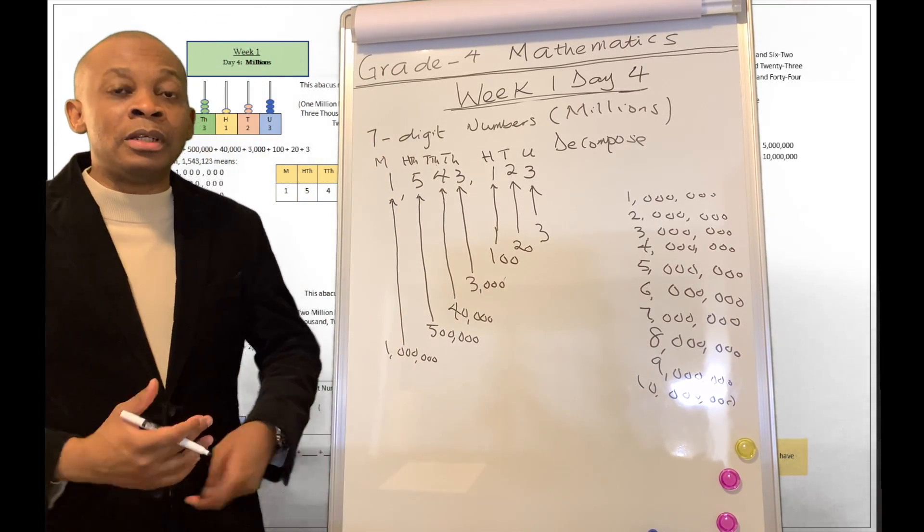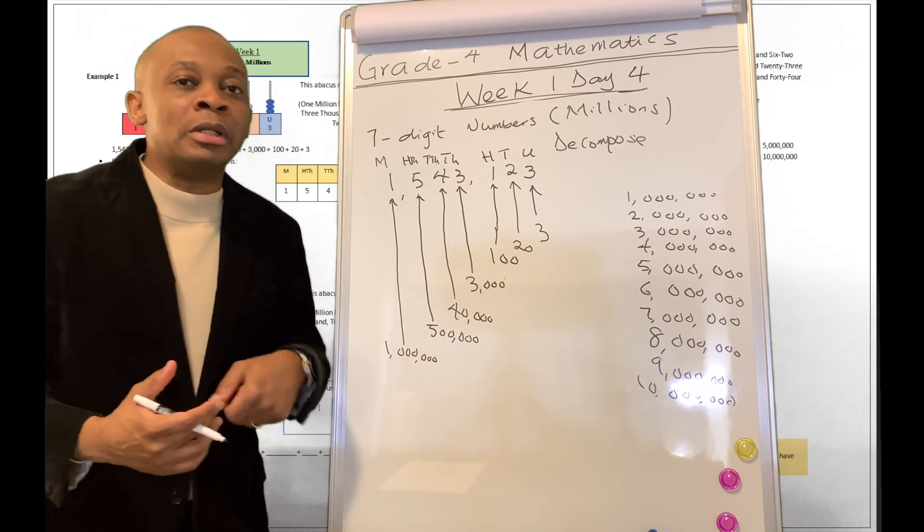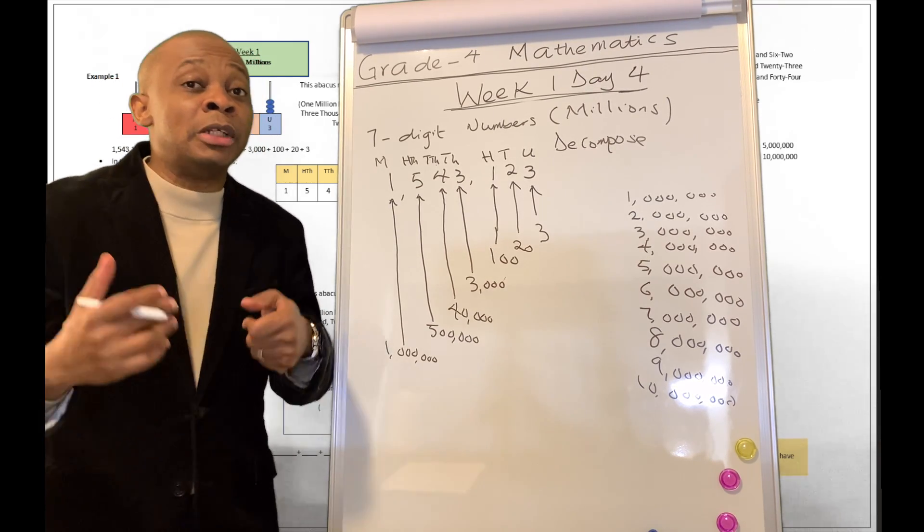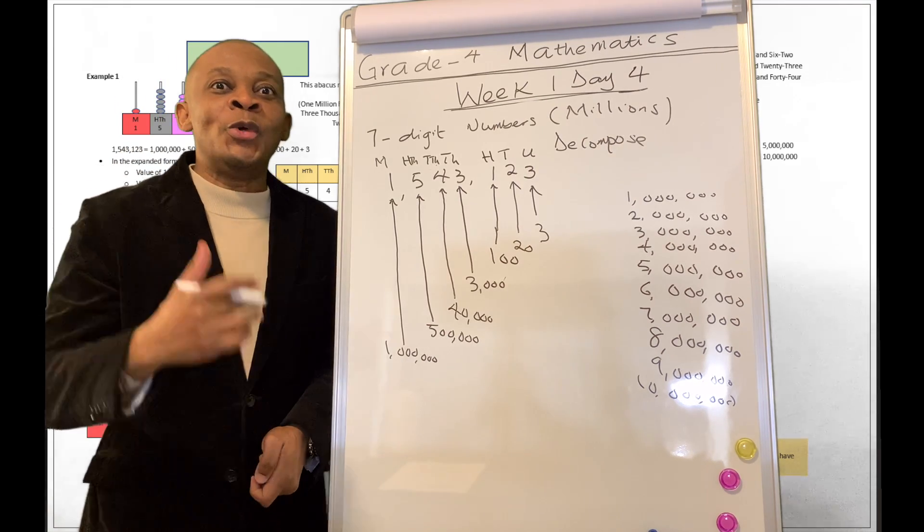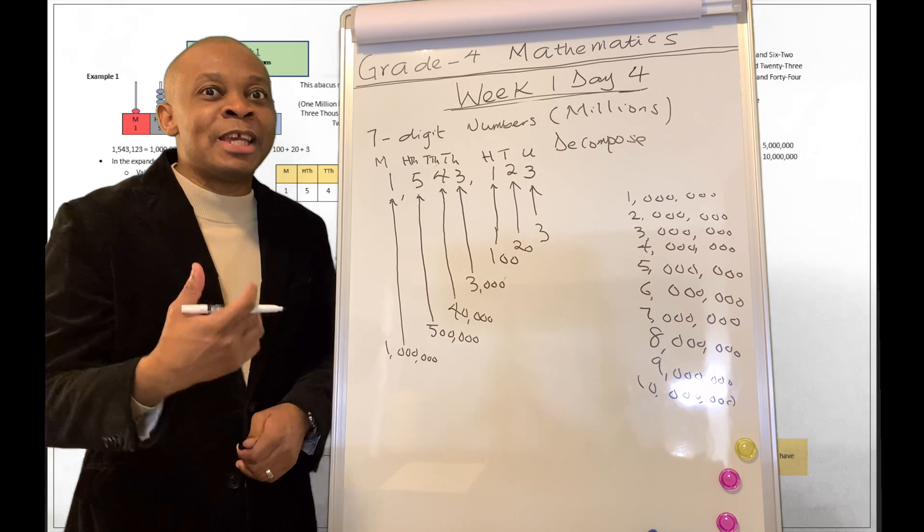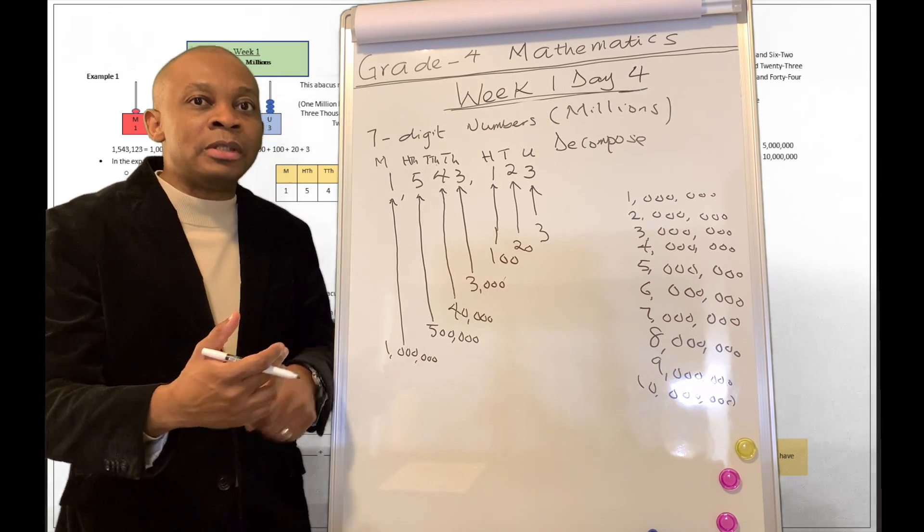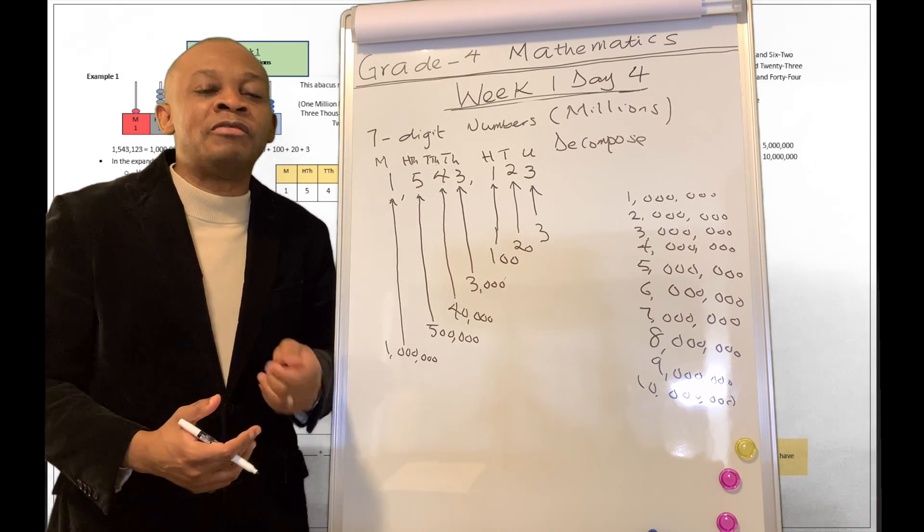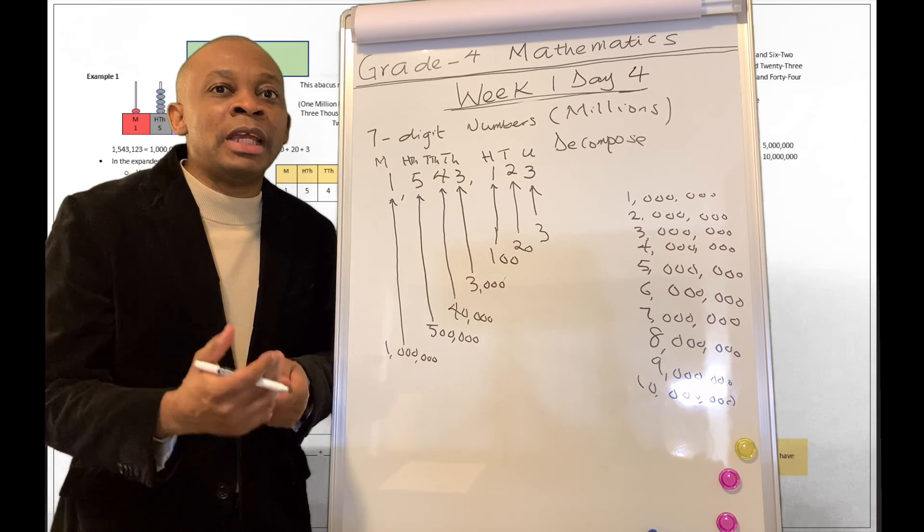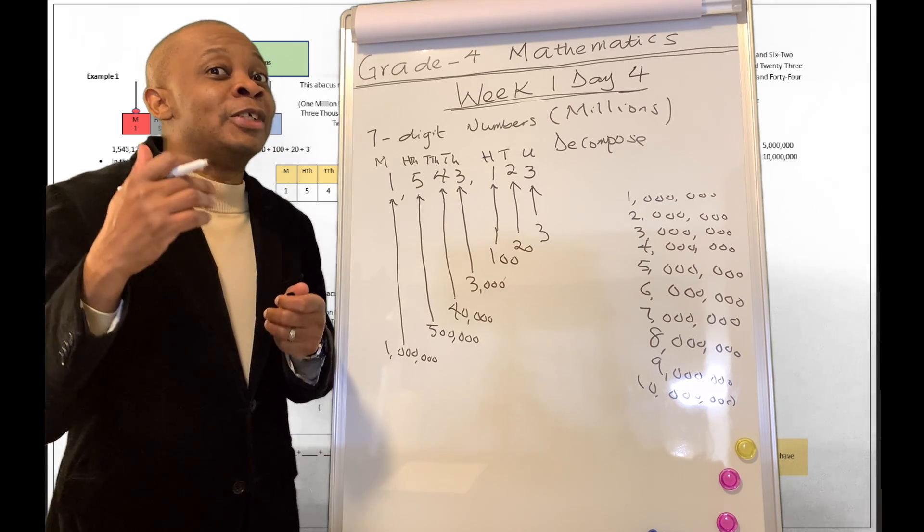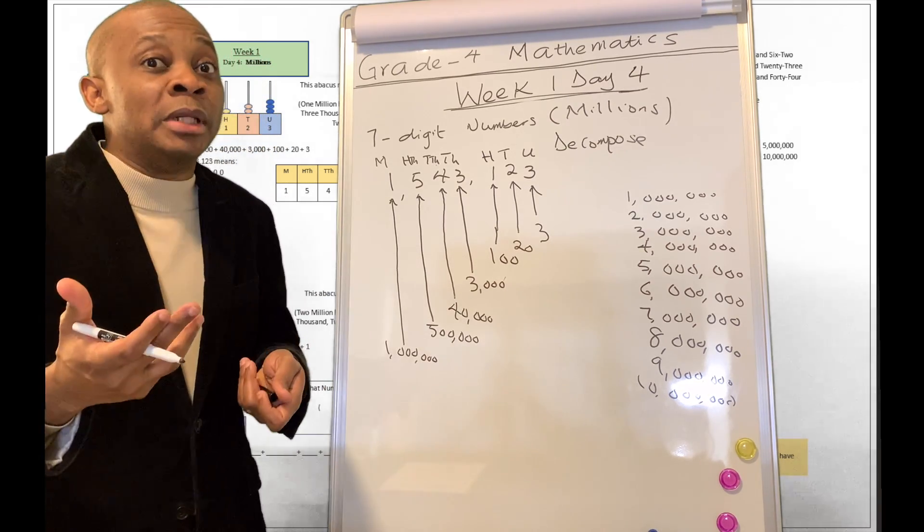You can say 10 million, and 20 million, and 30 million, 40 million, 50 million, 60 million, 70 million, 80 million, 90 million, until you get to 100 million. And you can count by 100 million. So 100 million, 200 million, 300 million, 400 million, 500 million, 600 million, 700 million, 800 million, 900 million. And you get to 1 billion.